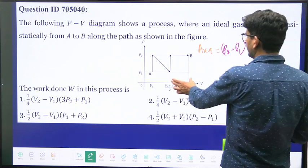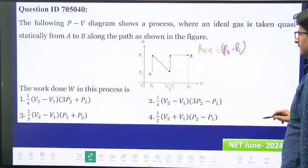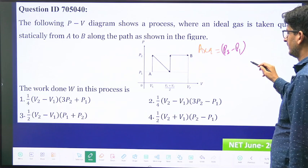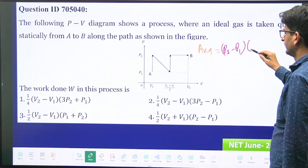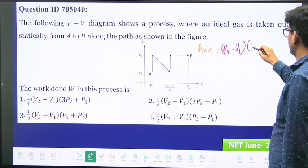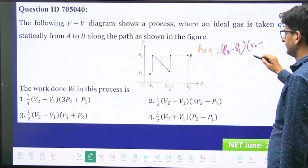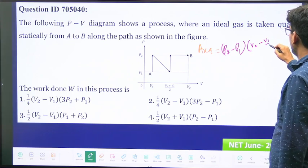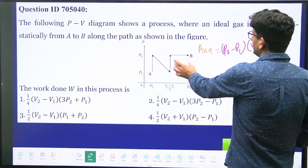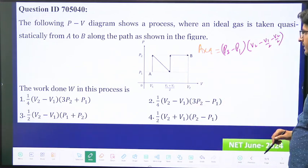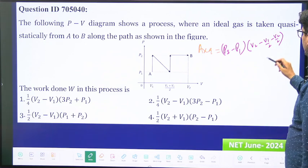this much, this is what, v2 minus v1 by 2 minus v2 by 2. So this is the area of this square, correct?